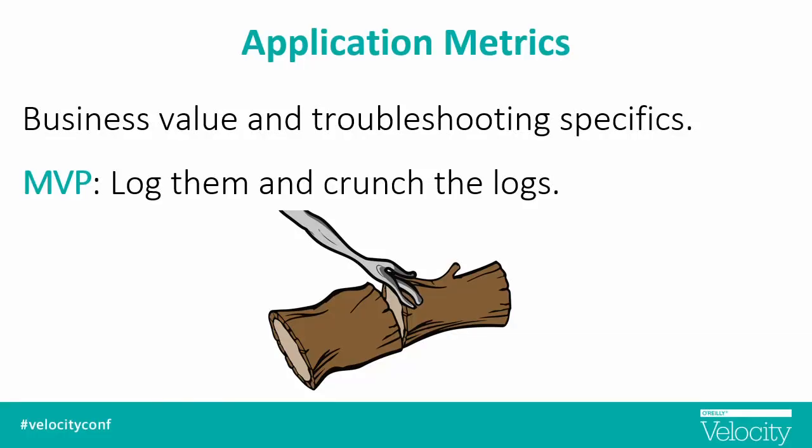Then, fourth, application metrics. These have the potential of being the most valuable because they have extremely business-specific meaning to you, but it requires work on the part of your application developers to put these in. Probably the best way for people to get started, until their developers can emit them out to Ganglia and APIs and stuff like that, is you log them and you crunch the logs. These four things get you that super baseline — I know enough about my systems to then move from there and start iterating.